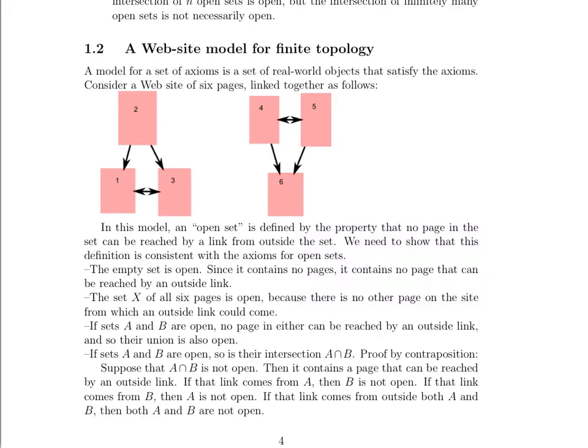And so we need to show that this definition is consistent with the axioms for open sets. That if this is the definition for open, then that also means that the intersection of two open sets is open or any n open sets is open, and that the union of any open sets is also open. So let's take a look.